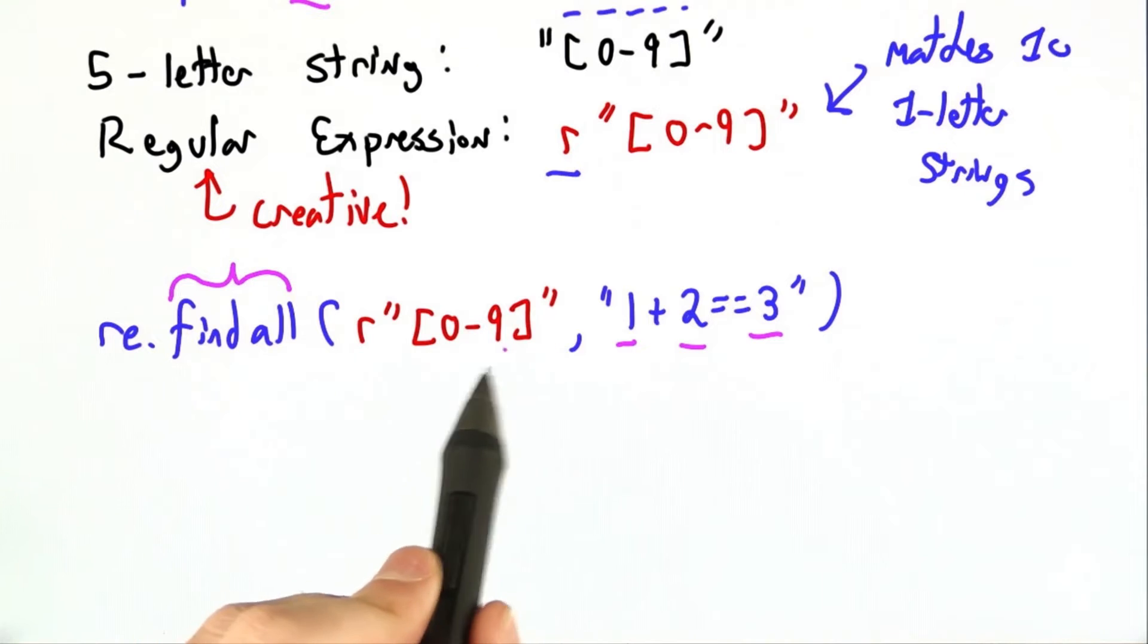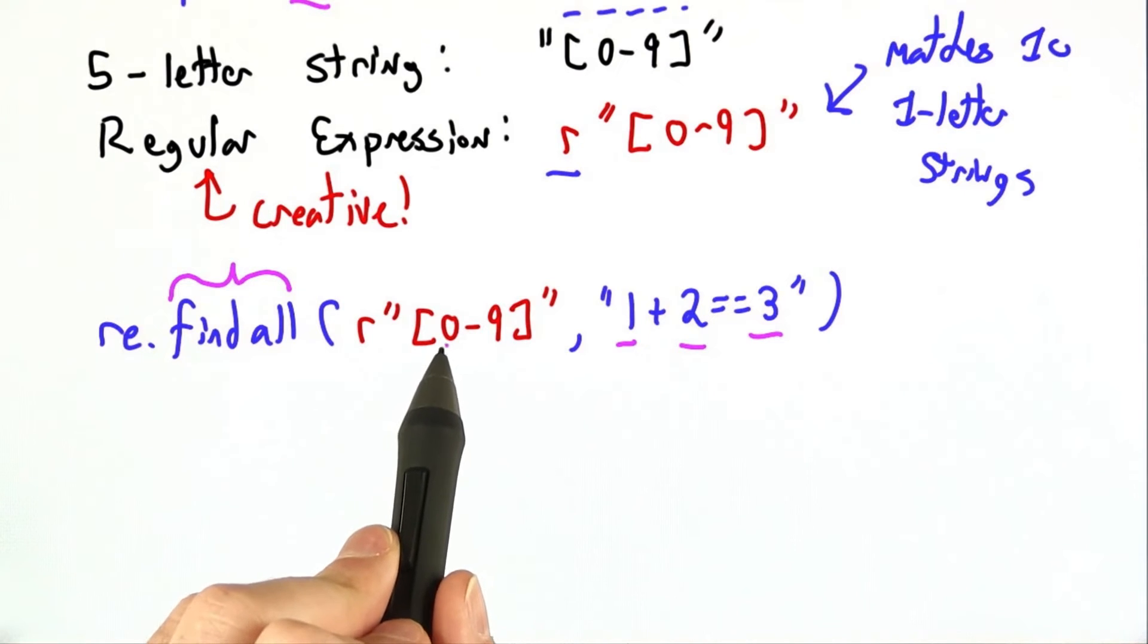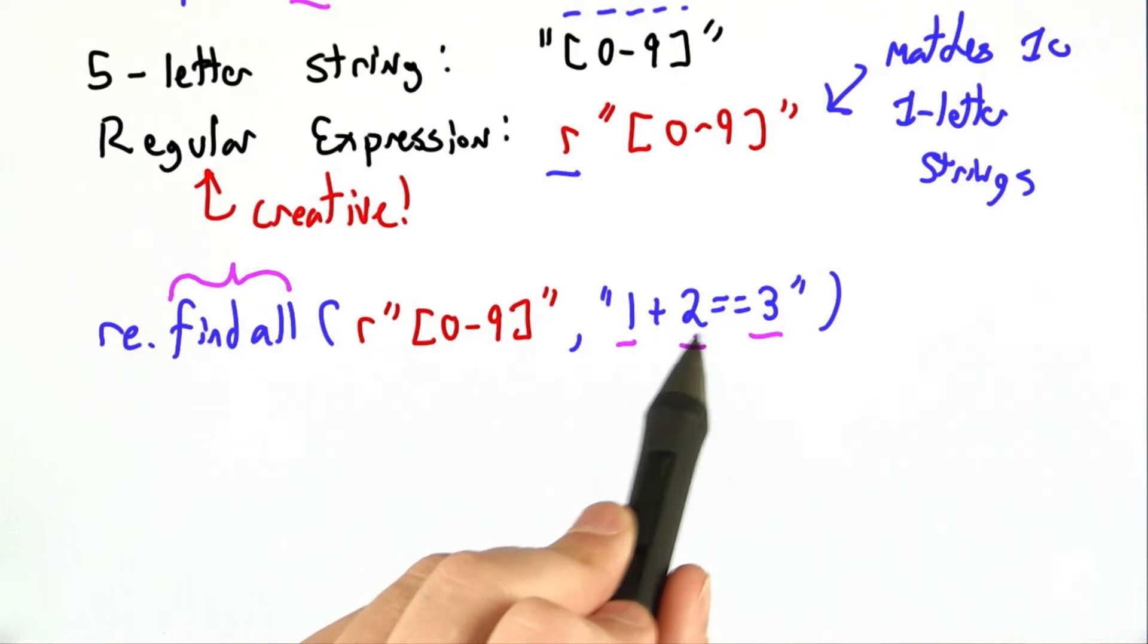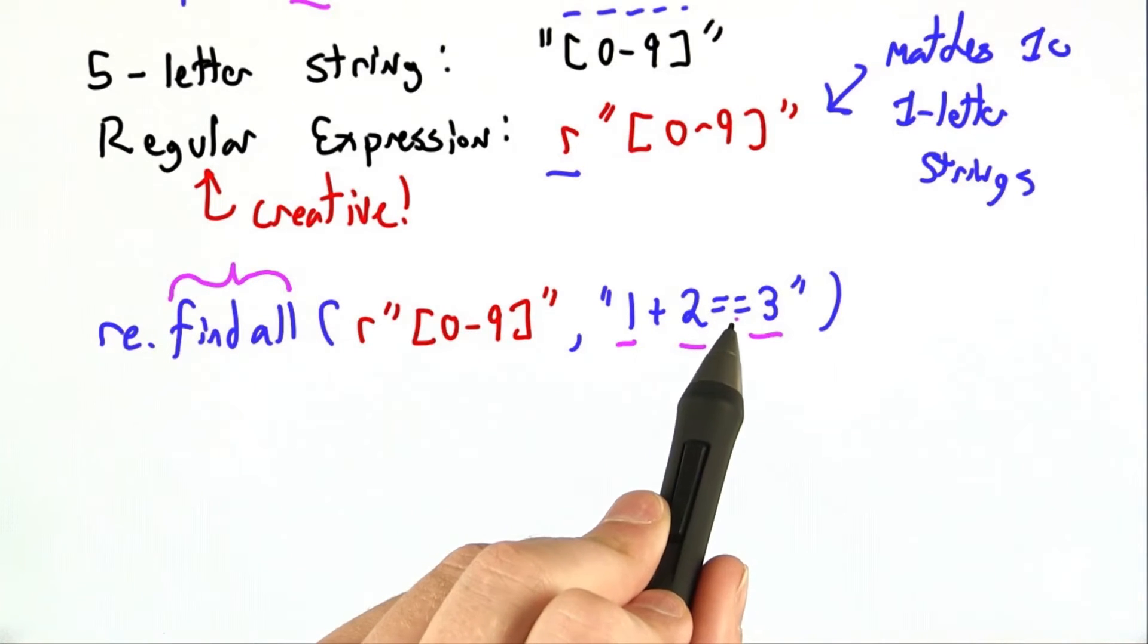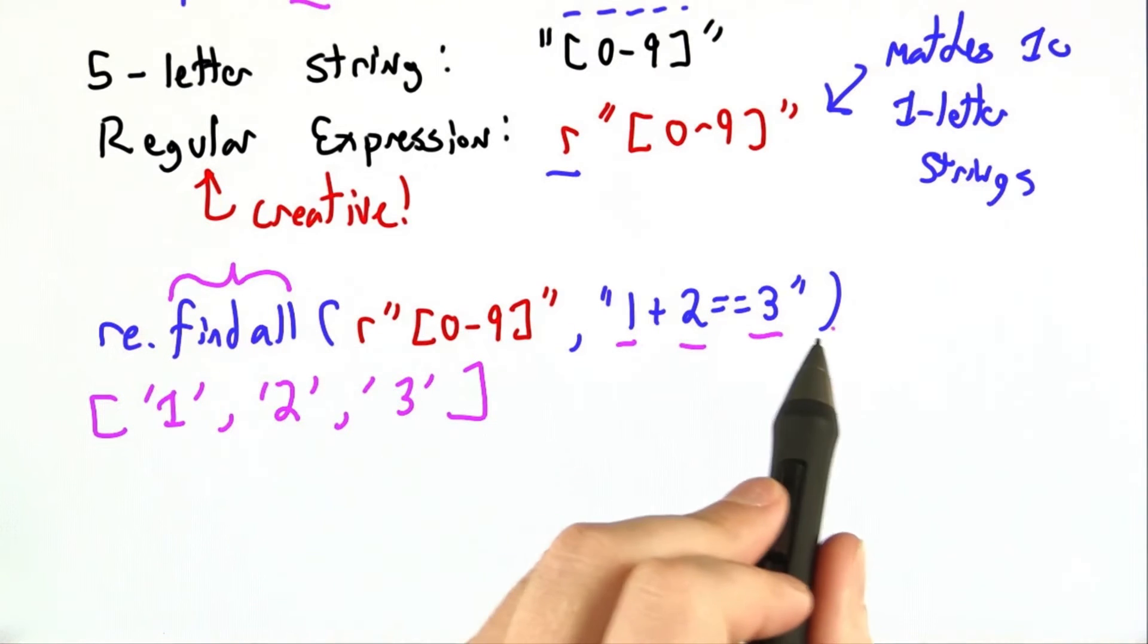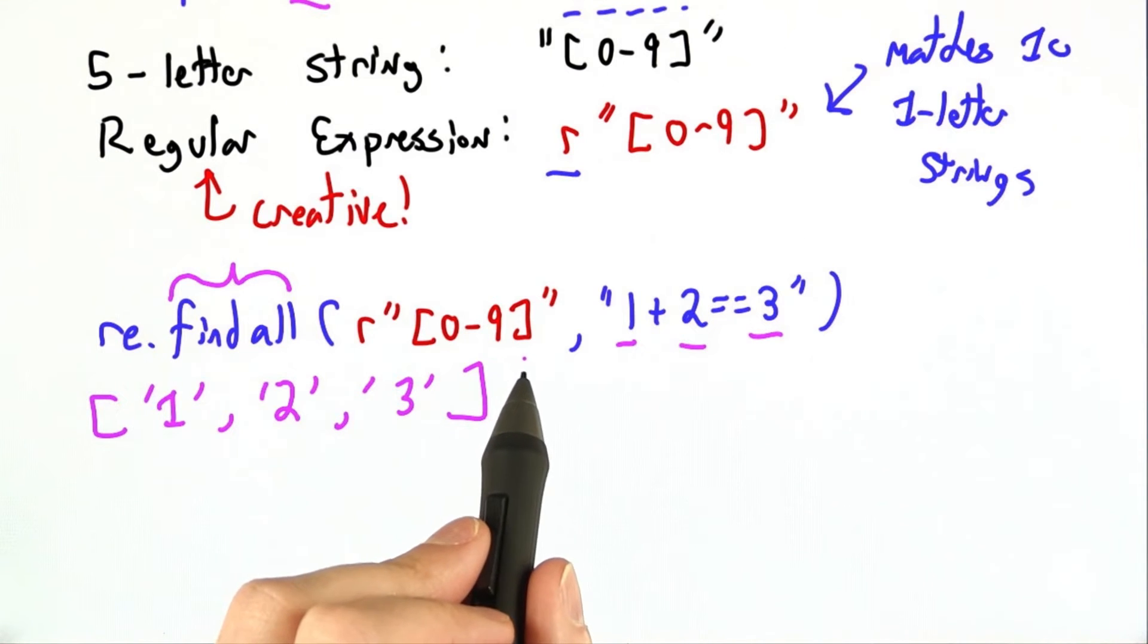So here, if we're looking for single letter strings that are between 0 and 9, the 1 matches, the plus does not, the 2 matches, the equals does not, the equals does not, and the 3 matches. The return value of re.findAll is a list, 1, 2, 3, of all of the substrings that match the regular expression.